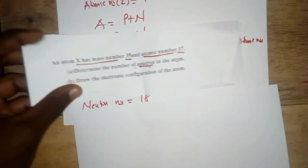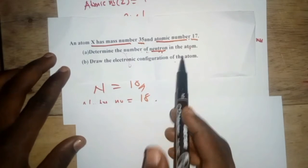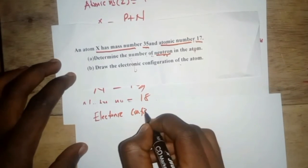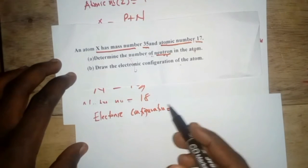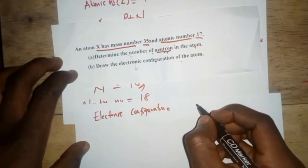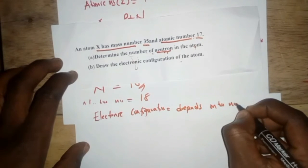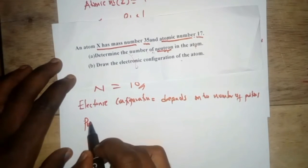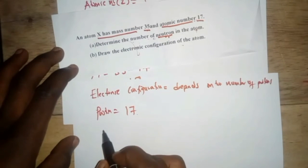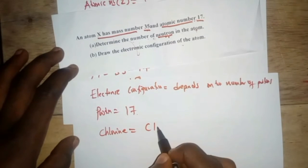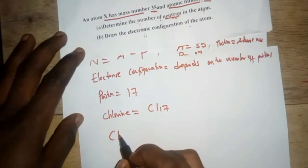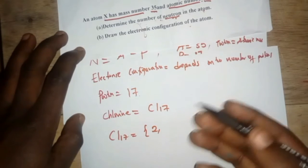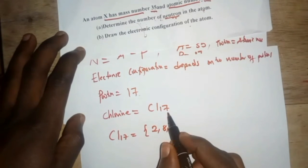The second part asks us to do the electronic configuration of the atom. The electronic configuration is just arranging the number of electrons in the shells, and it depends on the number of protons. Since the proton count is 17, we know the 17th element is chlorine (Cl). The first shell always takes a maximum of 2 electrons.